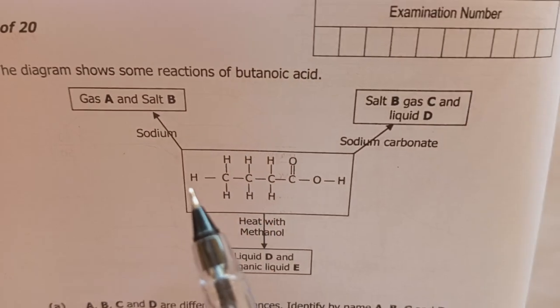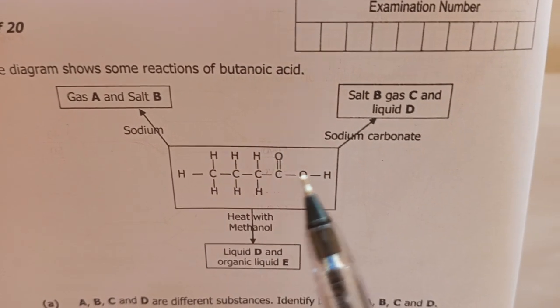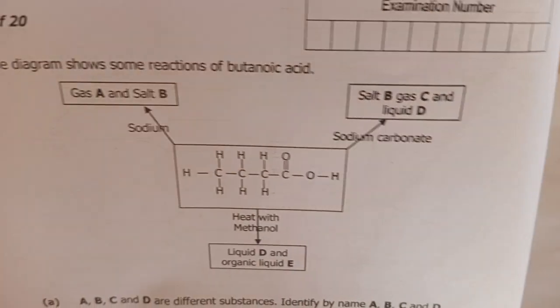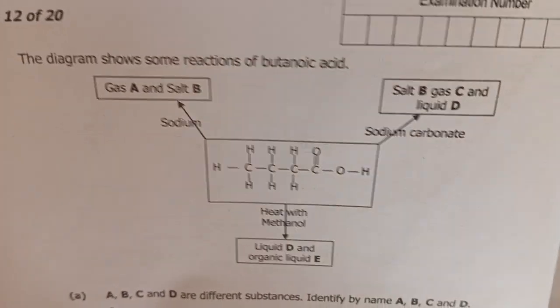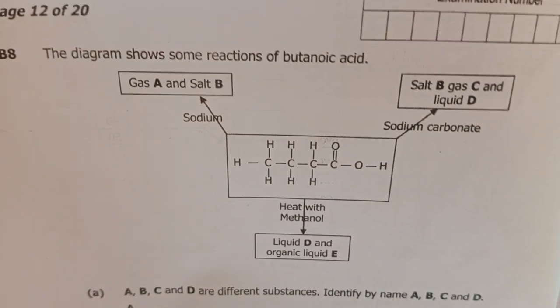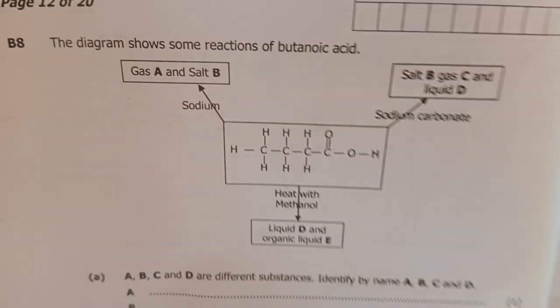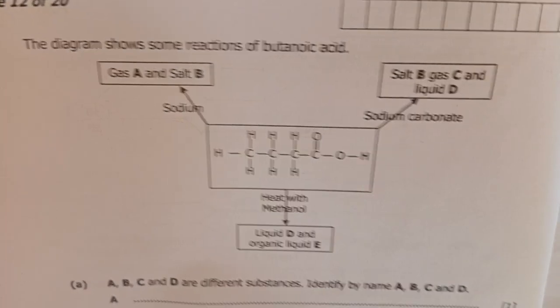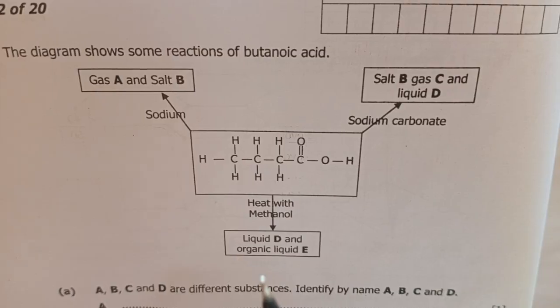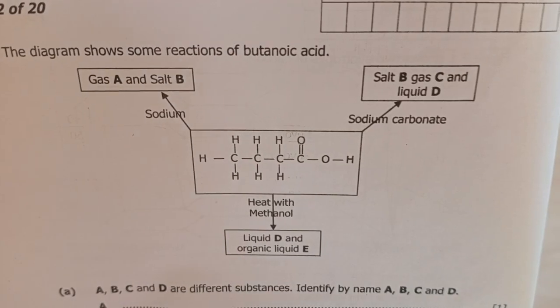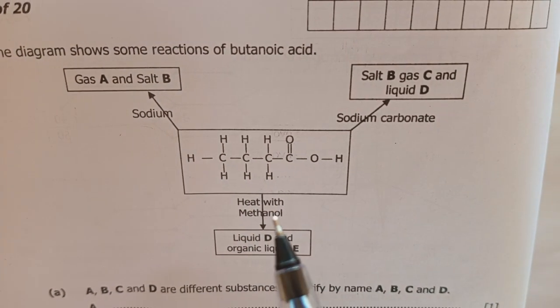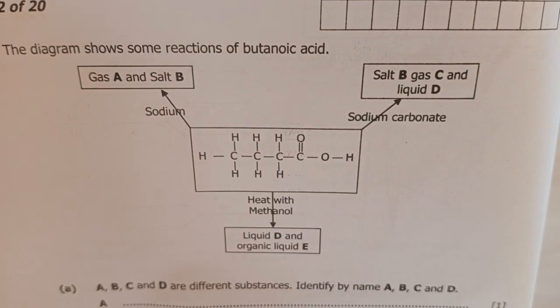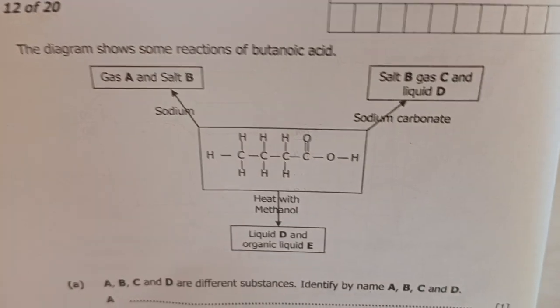When you heat butanoic acid and methanol and add sulfuric acid as a dehydrating agent, you're basically forming what is known as an ester. This ester will be called methyl butanoate because we have methanol and butanoic acid.